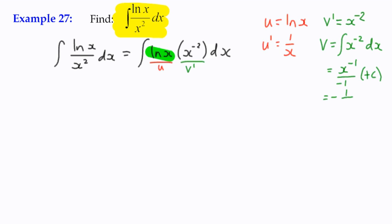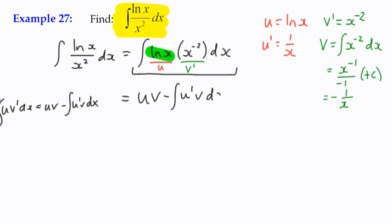Simplifying that gives you negative 1 over x. So we can use our integration by parts to say that this u v dash integral here, the integral of u v dash dx is equal to u v minus the integral of u dash v dx. Remember it. Write it in. u v minus the integral of u dash v dx.